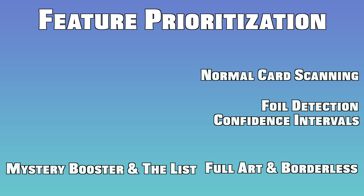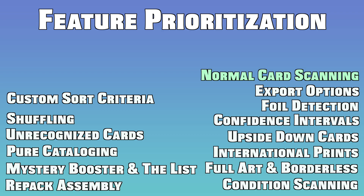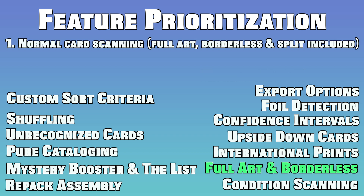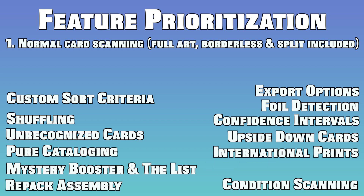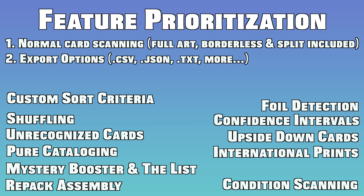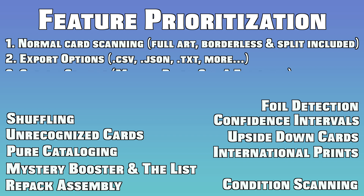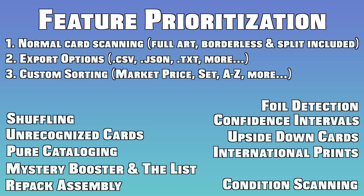Now let's get into how I'm prioritizing each of these features. First up, the entire point of the machine really is accurate normal card scanning — within my normal designation I am including full art, borderless, and split style printings, as the vast majority of cards will fall into this category. Next up are the export options: it's crucial that the machine integrates well with existing inventory management systems, so this is a must. Another must-have is custom sorting criteria — everybody organizes their cards differently, and I want to provide a tool to help you sort your own way. Commonly used sorting criteria like market price, set, card name, and color are my top priorities, followed by more later.